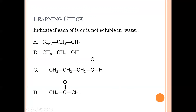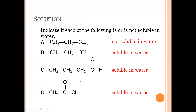Solubility examples: A (propane, all single bonds) — not soluble in water. B (ethanol with OH, two carbons) — soluble in water. C (butanal, four carbons — don't forget to count the aldehyde carbon) — soluble. D (2-propanone, three carbons, a ketone) — soluble because it's fewer than five carbons.